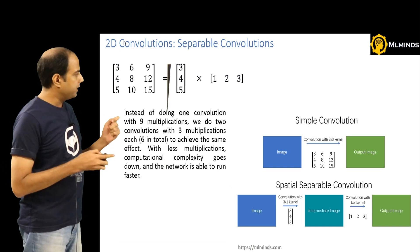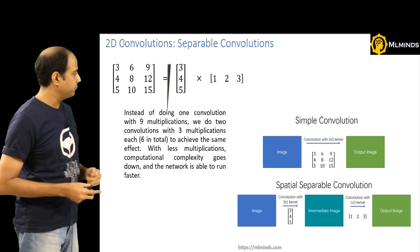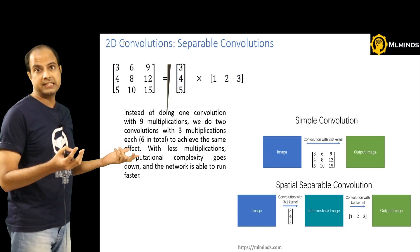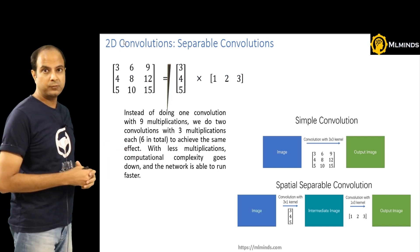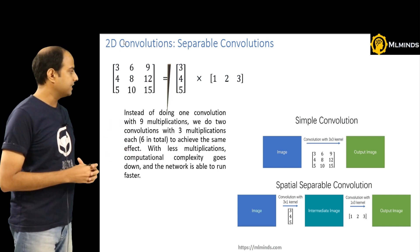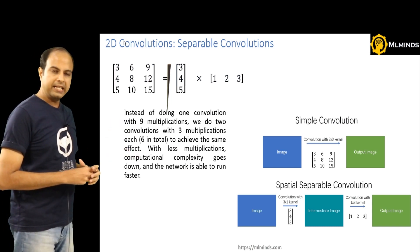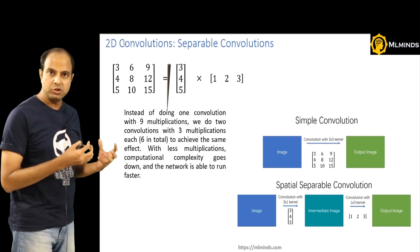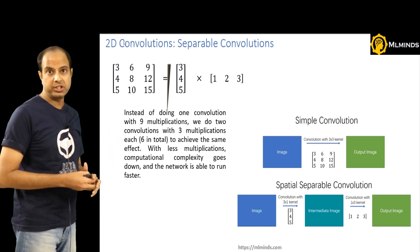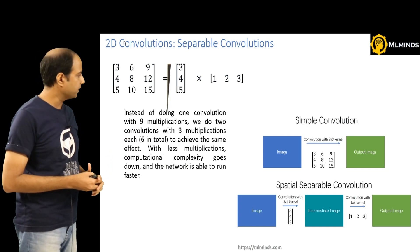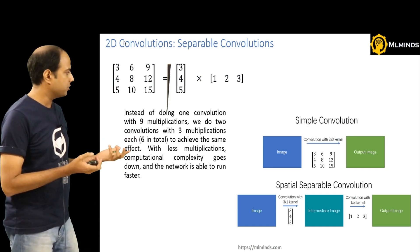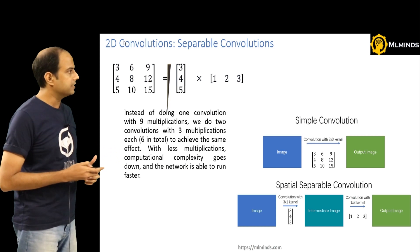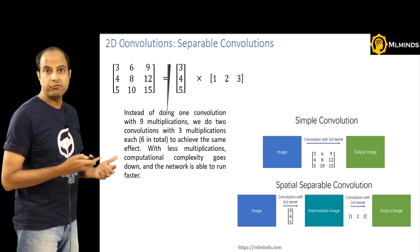Instead of doing one convolution with nine multiplications, we do two convolutions with three multiplications each — just six total — to achieve the same effect. We require less space to store these kernels and the number of computations is smaller. With fewer multiplications, computational complexity goes down and the network runs much faster.